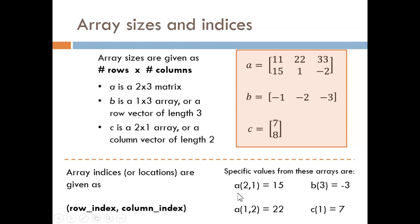A(2,1) tells MATLAB to look at matrix A and extract the value in the second row and first column. This happens to hold a 15. A(1,2) pulls out the value in the first row and second column from A. Here we see that is a 22.